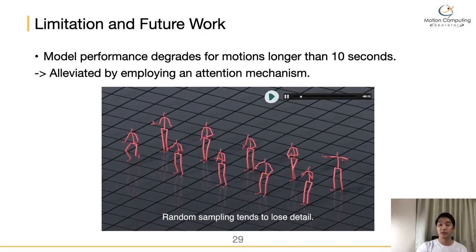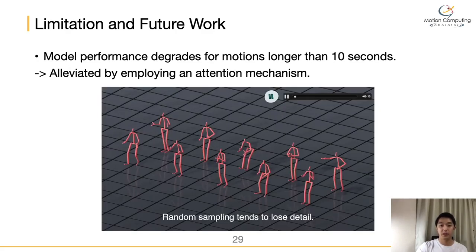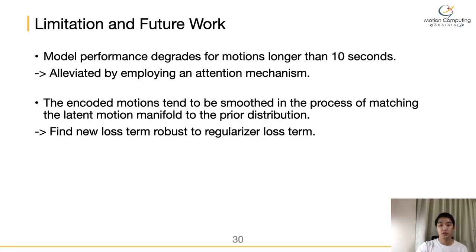Our method has several limitations. First, as a sequence-to-sequence framework, the performance of our model degrades when training to produce motion longer than 10 seconds. As seen in the video, the resulting motion tends to lose fine details. This limitation may be alleviated by employing an attention mechanism. Second, the encoded motion tends to be smoothed in the process of fitting the latent motion manifold to the prior distribution through the regularizer. For example, motions that contain frequent and rapid shaking, such as walking with a dog or discussion motions, lose fine details when reconstructing. This limitation presents an interesting topic for future work.